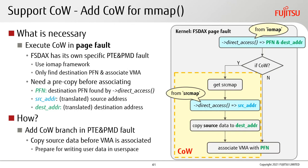In the mmap path, adding copy-on-write is also necessary. FSDAX has its own specific PTE fault and PMD fault (4KB and 2MB pages), using the IOMAP framework, but currently it only finds the destination page and associates it with the VMA. To support copy-on-write, we need a pre-copy before associating: we use direct_access to get the destination address and PFN (for associating). Then, similar to the write path, we get the source address from srcmap, copy source data to destination, and associate the VMA with the PFN. At this point, copy-on-write has been added to FSDAX.